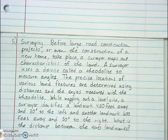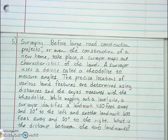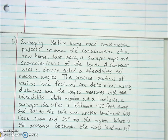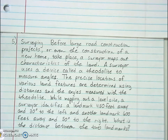Before large road construction projects, or even the construction of a new home, a surveyor maps out characteristics of the land. A surveyor uses a device called a theodolite to measure angles. The precise location of various land features is determined using distances and the angles measured with the theodolite. While mapping out a site, a surveyor identifies a landmark 450 feet away and 30 degrees to the left, and another landmark 600 feet away and 50 degrees to the right.